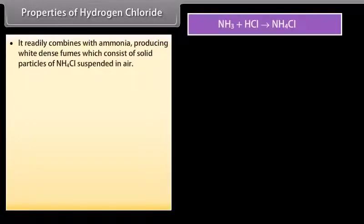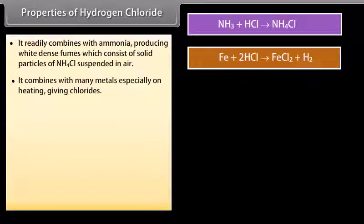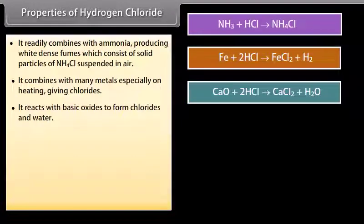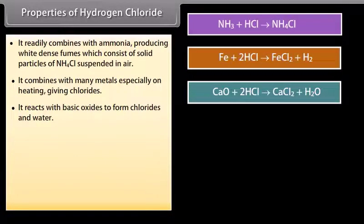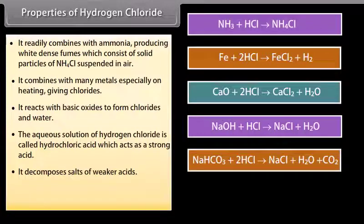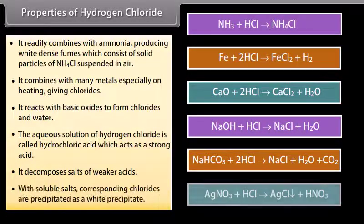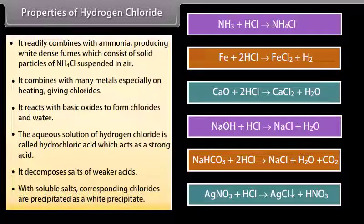Hydrogen chloride is used in the manufacture of Cl2 and NH4Cl, in the extraction of glue from animal tissues and bones, in pickling of steel, and as a laboratory reagent. Properties: It readily combines with ammonia producing white dense fumes of solid NH4Cl. It combines with many metals on heating, giving chlorides. It reacts with basic oxides to form chlorides and water. Its aqueous solution is hydrochloric acid, which acts as a strong acid, decomposes salts of weaker acids, and with soluble salts precipitates corresponding chlorides as a white precipitate.